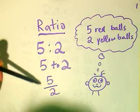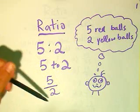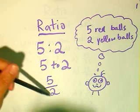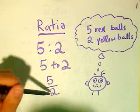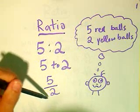Or, in fact, you can even write it in a fractional form, 5 over 2, meaning 5 red balls to 2 yellow balls.